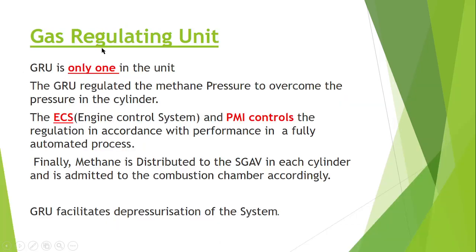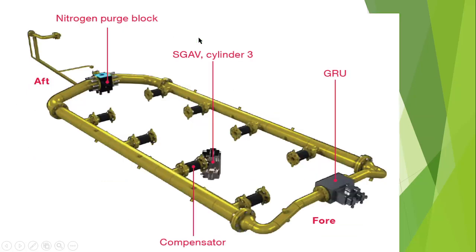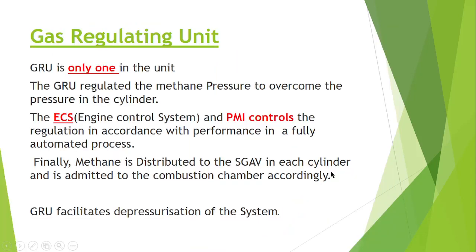Now let's look at the Gas Regulating Unit. As you can see here, the Gas Regulating Unit is provided. There is the number of cylinders, the nitrogen block, and the GRU — Gas Regulating Unit. By the word 'regulating' we mean control, so basically the GRU is only one unit.